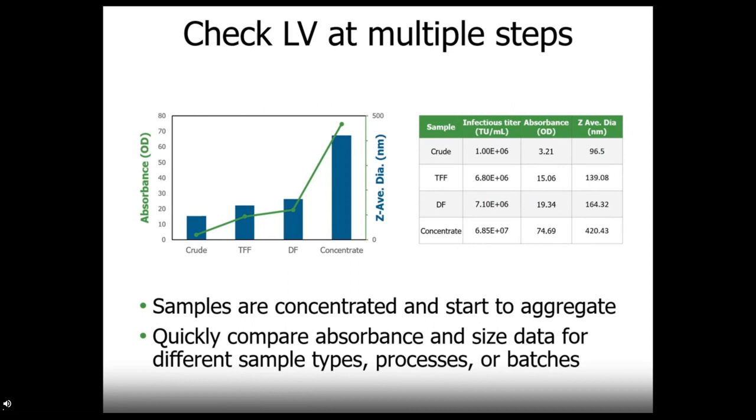And UV-Vis can help you as well. Here are the absorbance results at 280 are shown in combination with the Z average diameter. Stunner allows you to find the perfect concentration without inducing aggregation and quickly compare between sample types, processes, and batches.